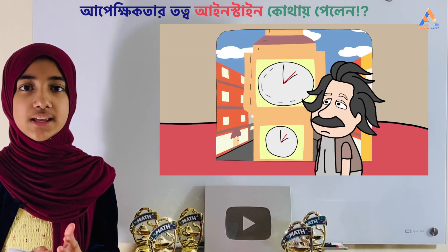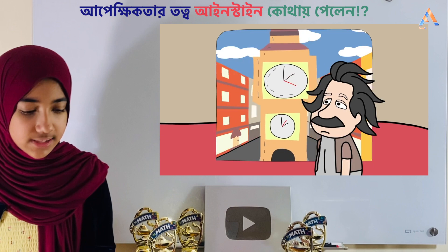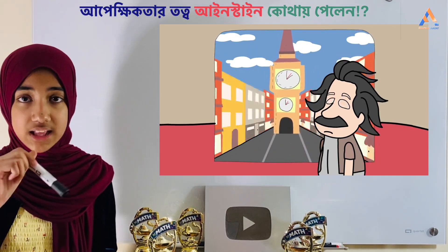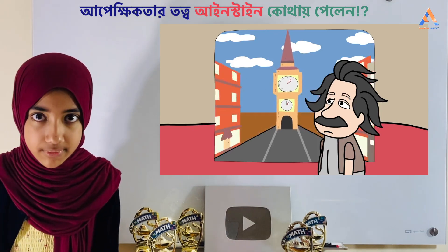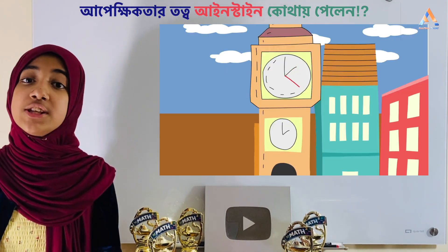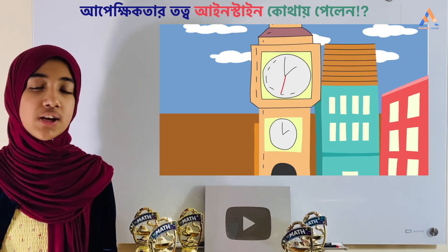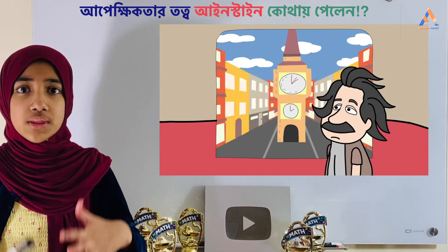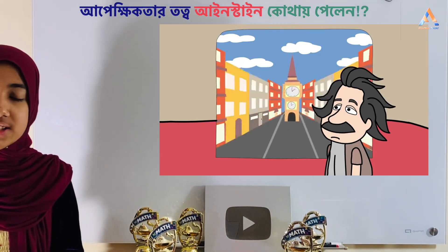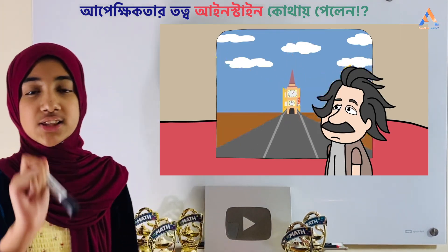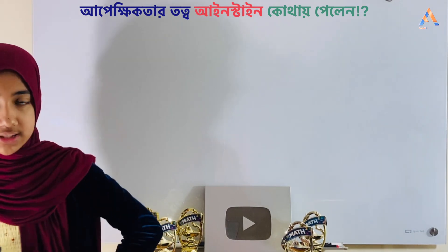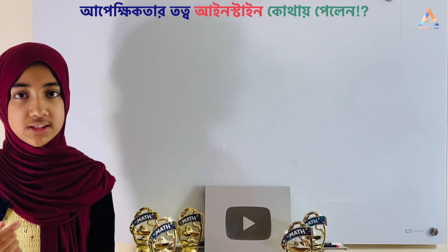Even as he was going through it, he thought: if he were traveling at the speed of light, the hands of the clock would appear still to him. But back at the clock tower, he knew the hands would appear to be moving normally. This thought blew his mind — the faster you travel through space, the slower you travel through time. It was a thought experiment.